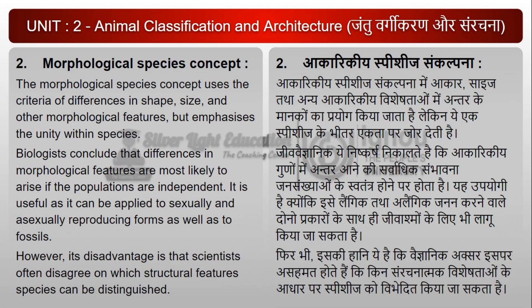2. आकारिकीय Species संकल्पना: आकारिकीय Species संकल्पना में आकार, आमाप तथा अन्य आकारिकीय विशेषताओं में अंतर के मानकों का प्रयोग किया जाता है, लेकिन ये एक species के भीतरी एकता पर जोर देती है। जीव वैज्ञानिक यह निष्कर्ष निकालते हैं कि आकारिकीय गुणों में अंतर आने की सर्वाधिक संभावना जनसंख्याओं के स्वतंत्र होने पर होती है। यह उपयोगी है क्योंकि इसे लैंगिक तथा अलैंगिक जनन करने वाले दोनों प्रकारों के साथ ही जीवाश्मों के लिए भी लागू किया जा सकता है। फिर भी इसकी हानि यह है कि वैज्ञानिक अक्सर इस पर असहमत होते हैं कि किन संरचनात्मक विशेषताओं के आधार पर स्पीशीज को विभेदित किया जा सकता है।